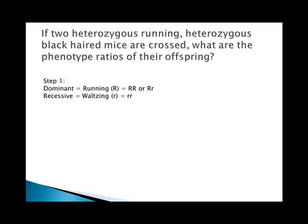Step one: dominant is running over waltzing, and black over brown. Step two: both parents are big R little r big B little b. Now you have to find the possible combinations for your square: big R can go with big B or little b, and little r can go with big B or little b — giving four possible combinations.